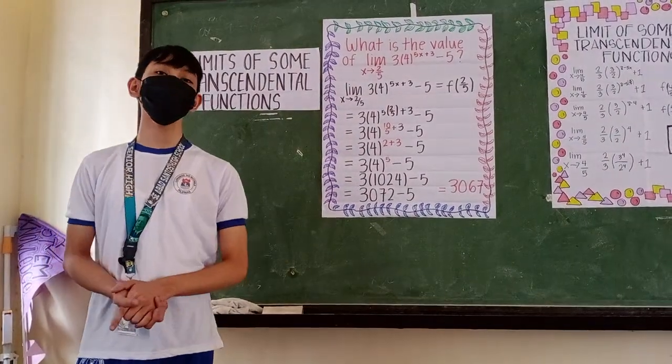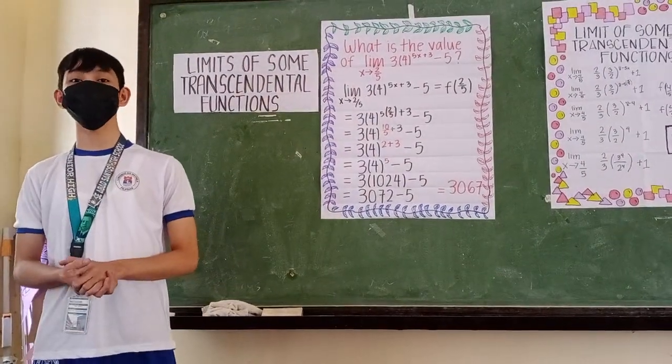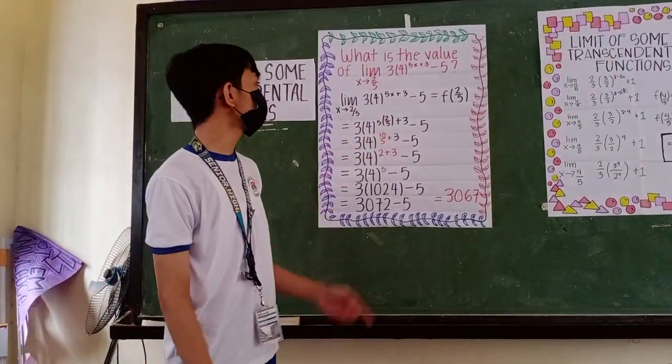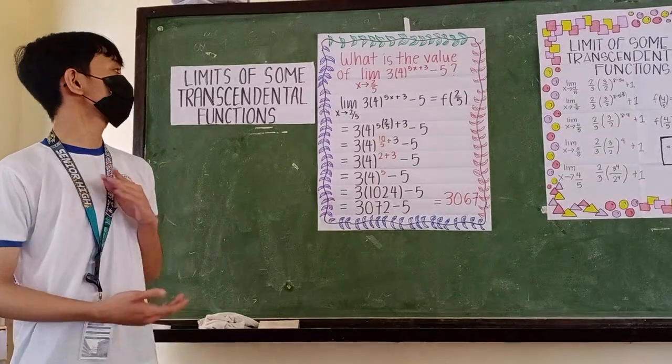In this problem, we need to use direct substitution. So, we need to say our f of 2 over 5 is equal to the argument of the limit.